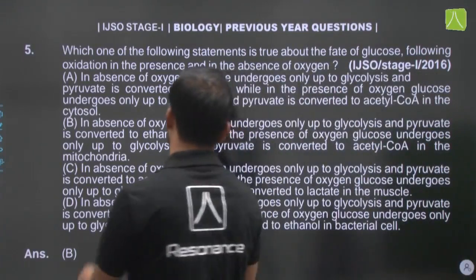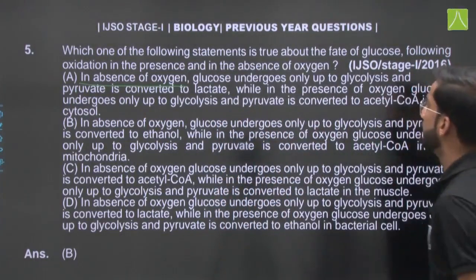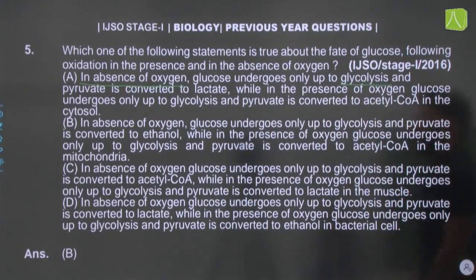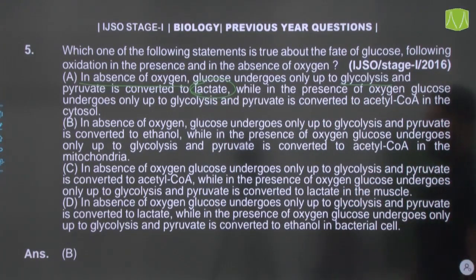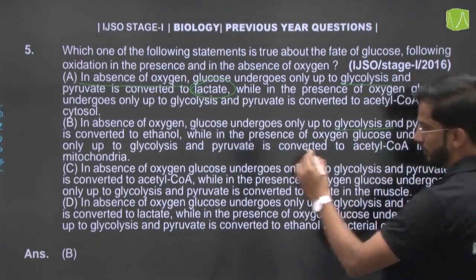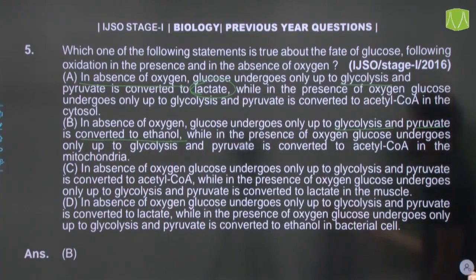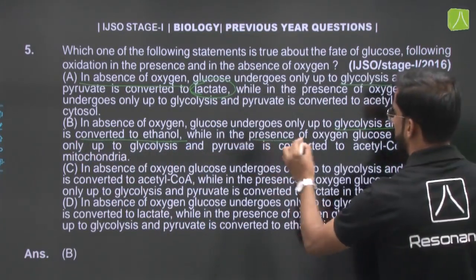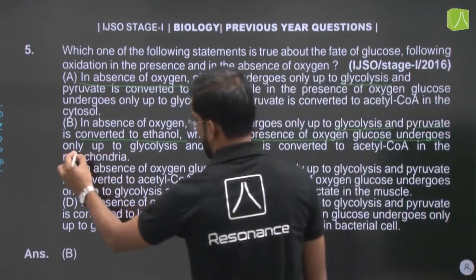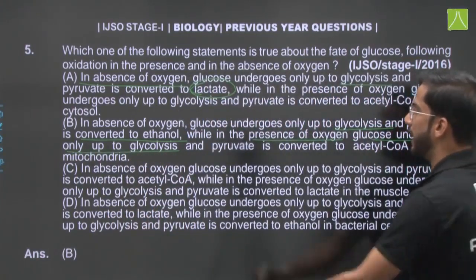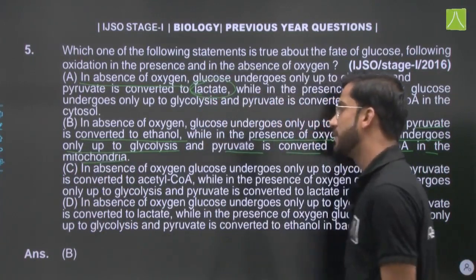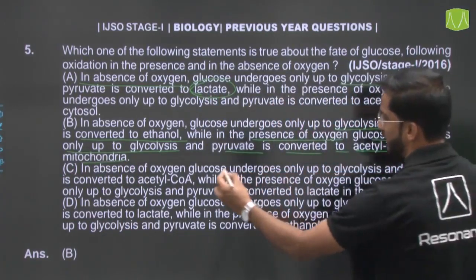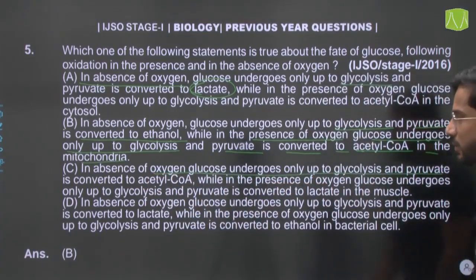Option A: In the absence of oxygen, glucose undergoes only glycolysis, pyruvic acid is formed, and then lactate is formed. Option B: In the absence of oxygen, glucose undergoes only glycolysis and pyruvic acid is converted into ethanol — this applies in yeast cells. Option C: In the absence of oxygen, glucose undergoes glycolysis and pyruvic acid is converted into acetyl coenzyme A — this is incorrect for anaerobic conditions.